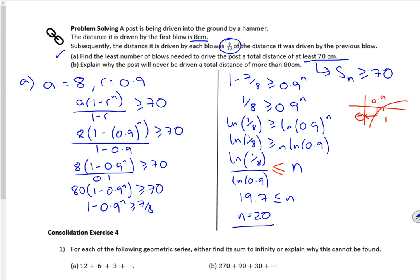Explain why the post will never be driven a total distance of more than 80 centimeters. Oh, that's just easier this one. Let's work out the sum to infinity. So if sum to infinity is more than 80, then I'm okay. So I've got 8 over 1 minus 0.9. So the sum to infinity is actually 80 centimeters.